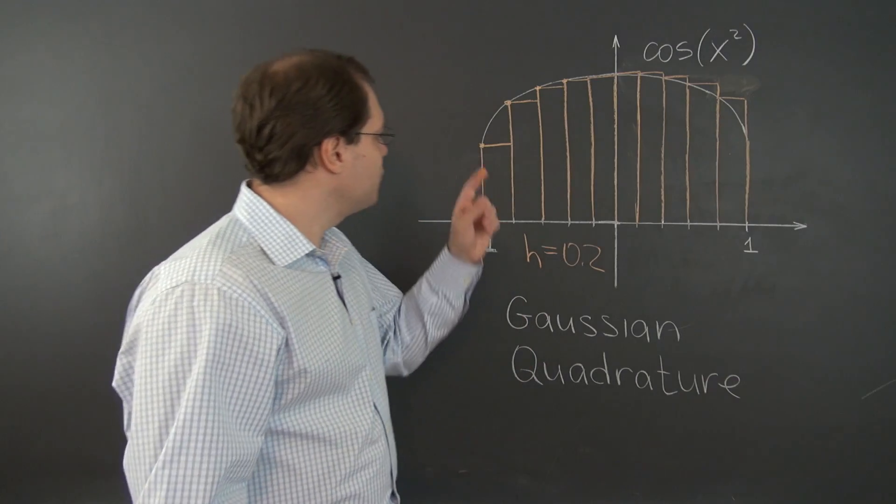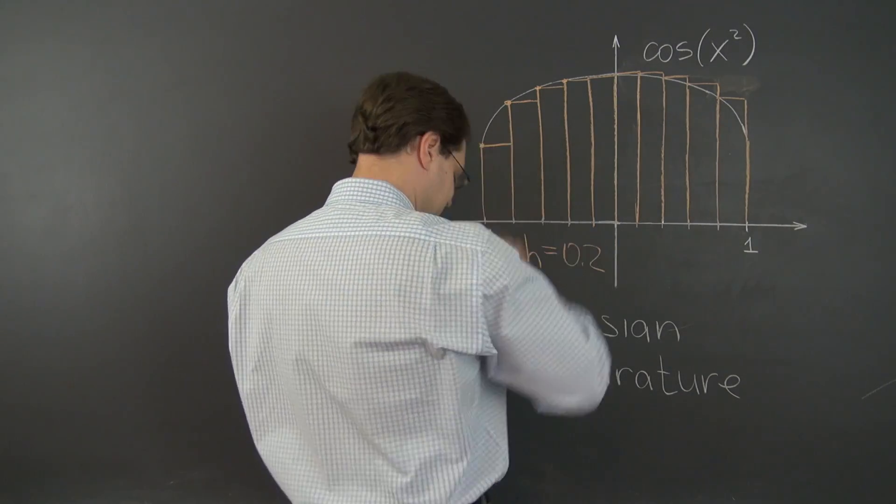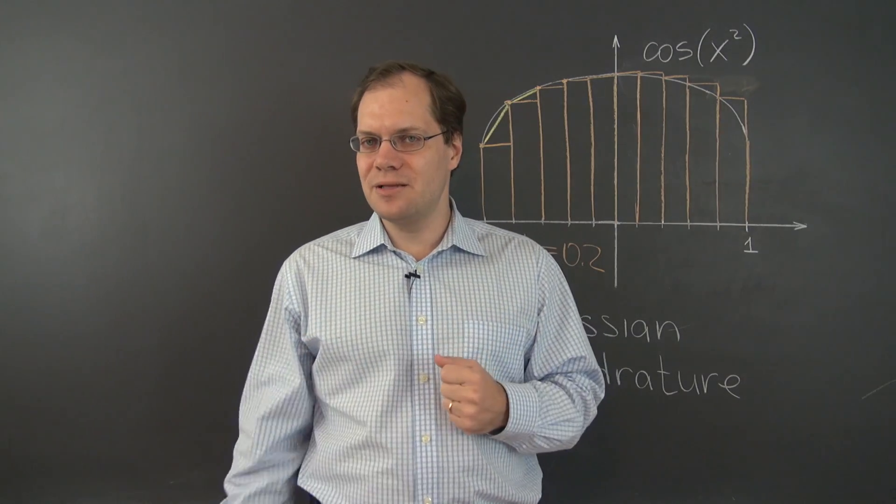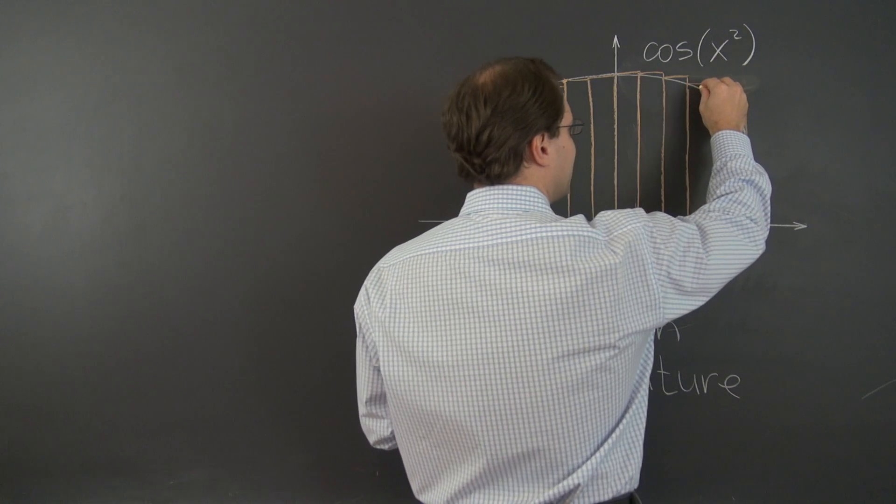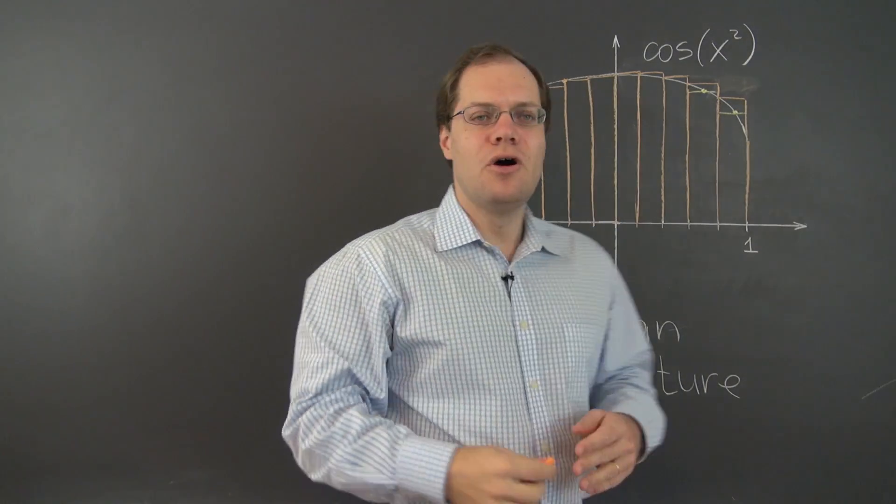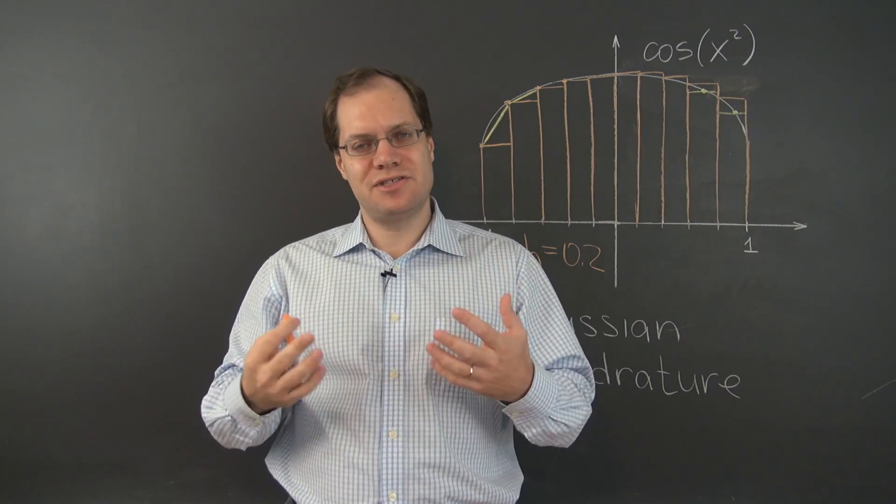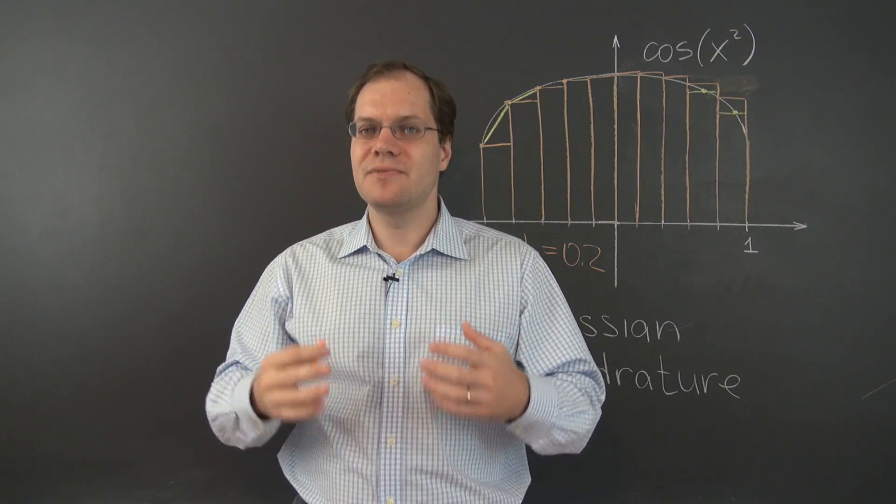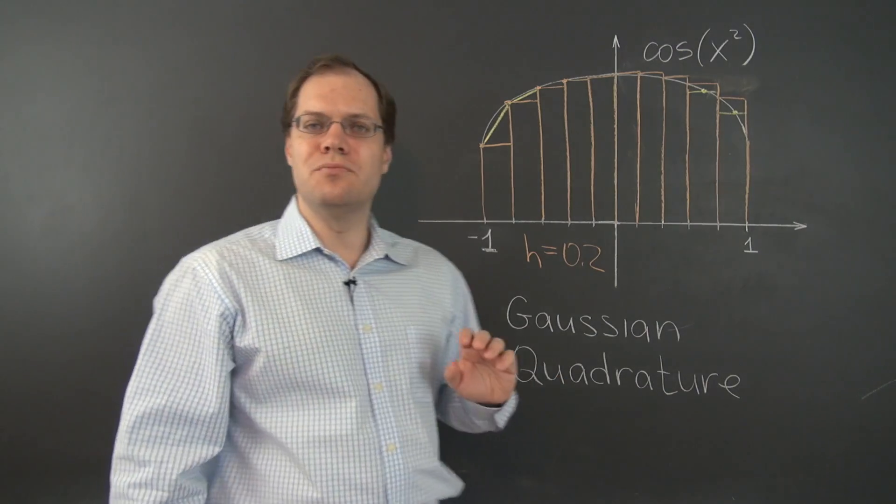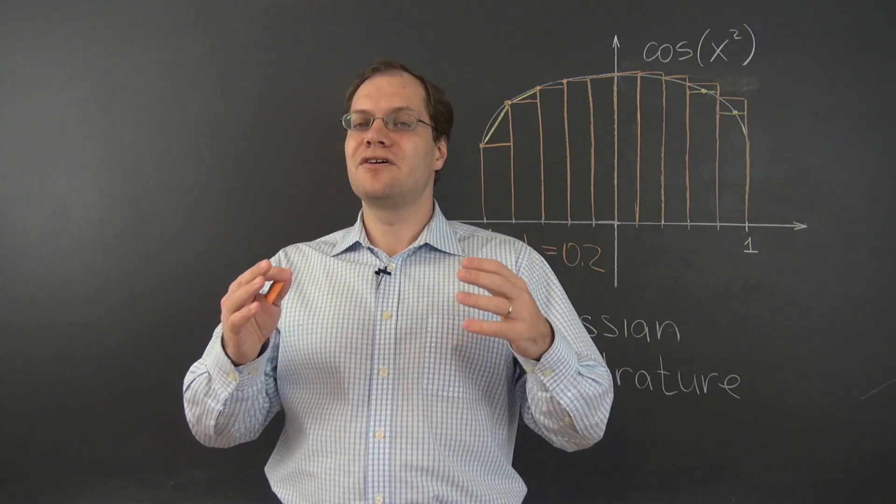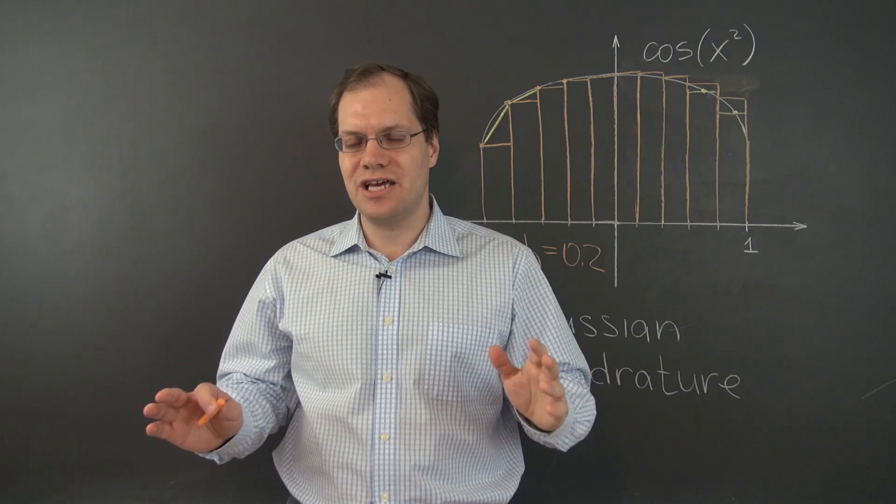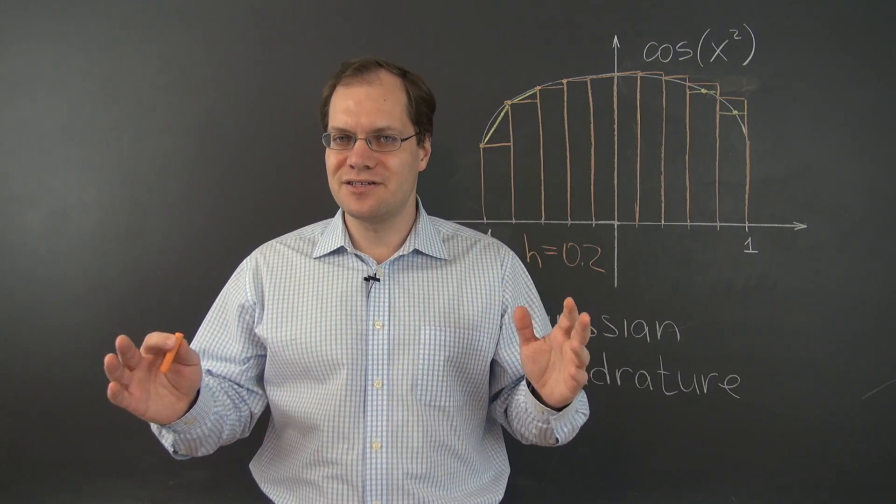Of course you can do better than that if you use not the rectangles but trapezoids. That's one thing that you can do that's a little bit better than the rectangles. Or instead of picking the left point you can perhaps pick the midpoint and use these rectangles, which you can see are better approximators. Both of these things will actually lead to significantly better results. But let's stick to the simplest thing for the purposes of our comparison with Gaussian quadrature, because Gaussian quadrature looks to do much better than all of these approaches.